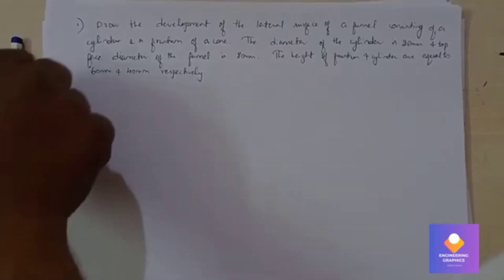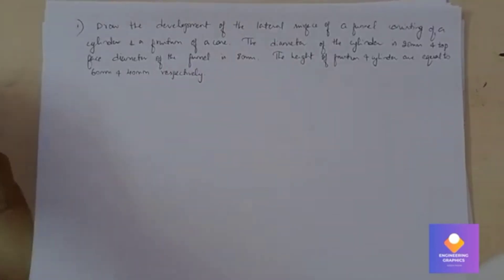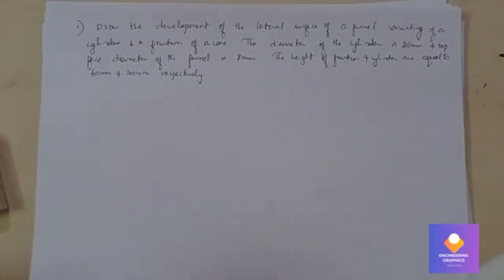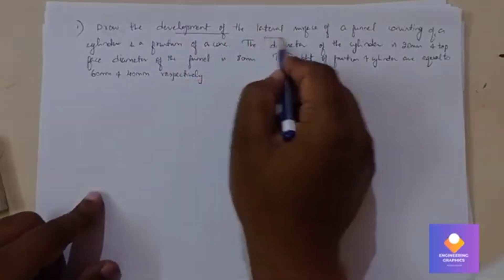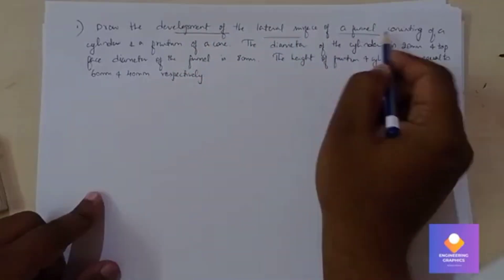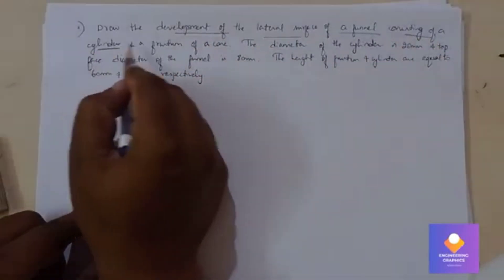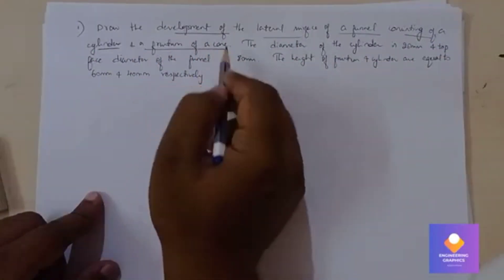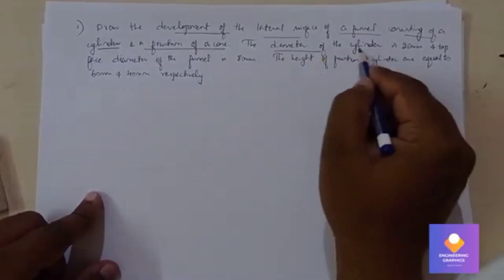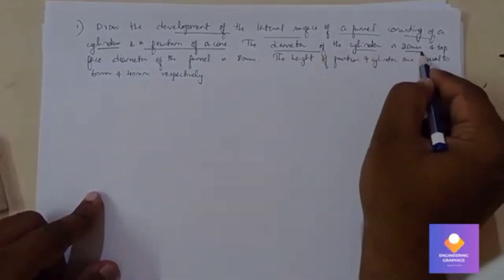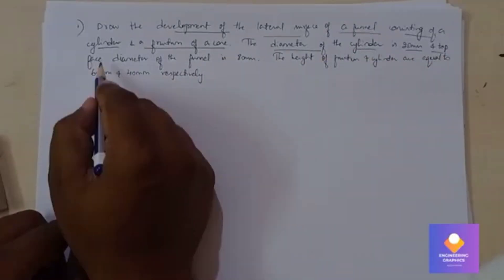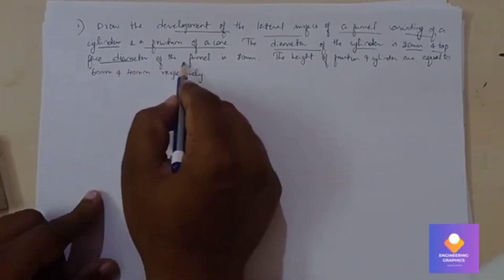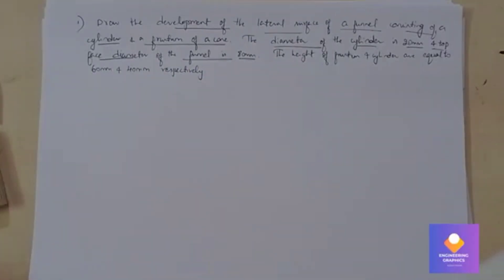Draw the development of the lateral surface of a funnel. The diameter of the cylinder is given as 20 mm, and the top face diameter of the funnel is given as 80 mm. The height of the frustum and cylinder are 60 and 40 mm respectively.